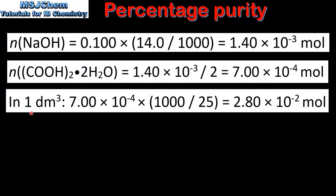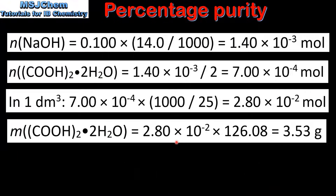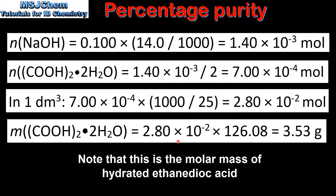Next we calculate the amount in moles of ethanedioic acid in 1 dm³ of solution. We multiply the amount in moles in 25 cm³ of solution by 1000 over 25, which gives us 2.80 × 10⁻² moles. We then convert the amount in moles to mass in grams by multiplying by the molar mass of ethanedioic acid, which gives us 3.53 grams.